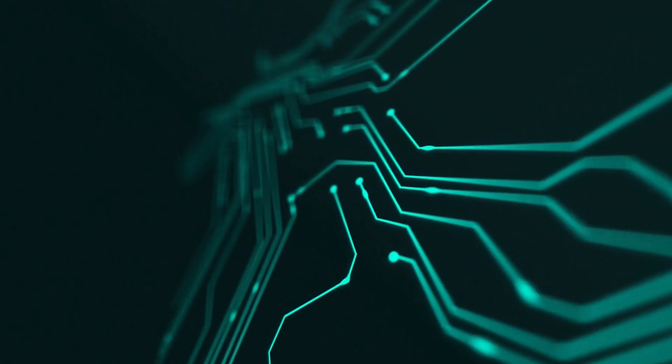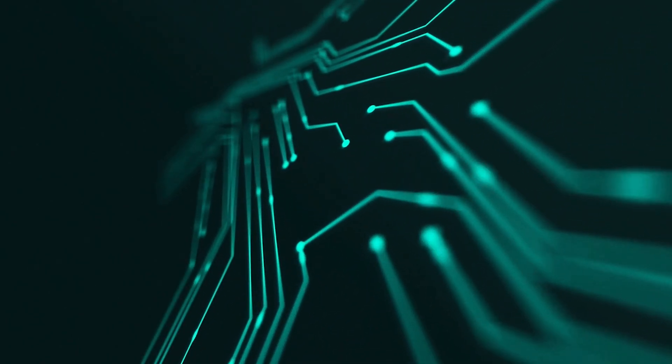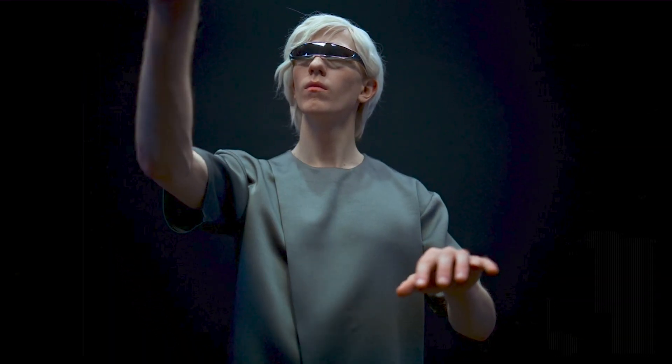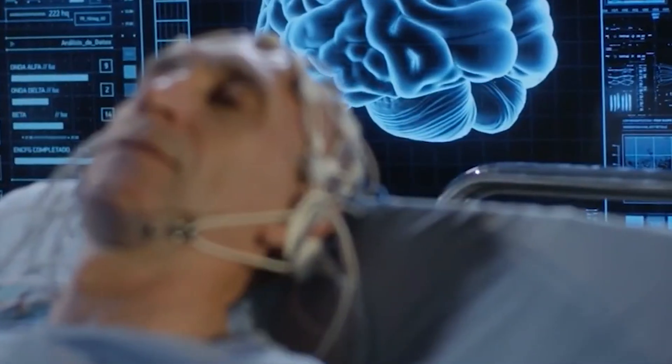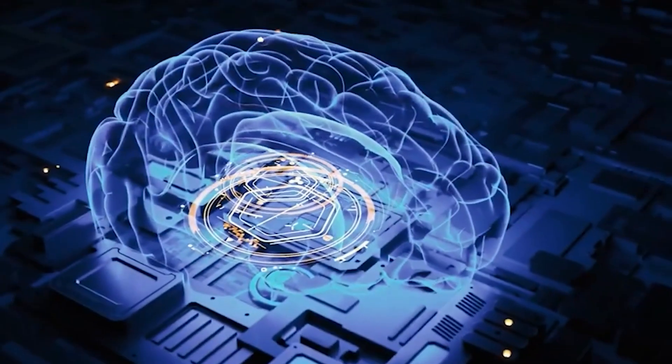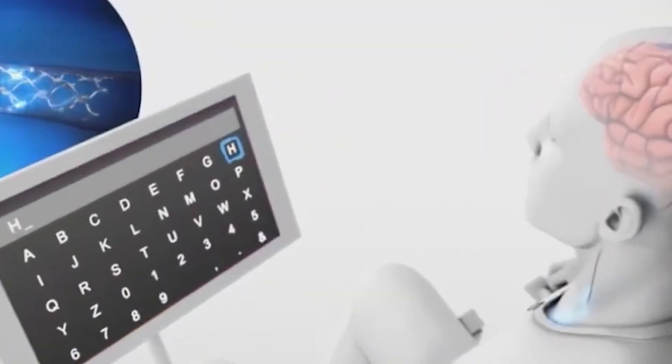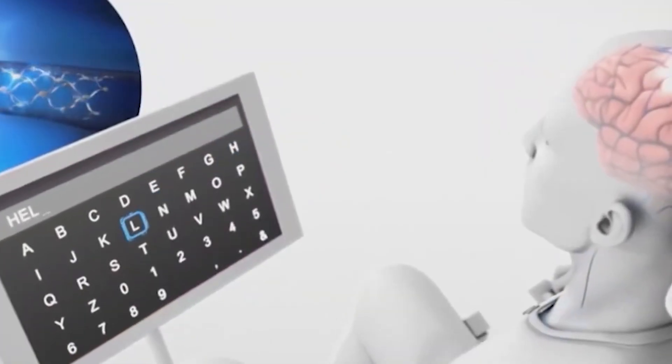Our brains work through tiny electrical signals passed between billions of neurons. Every thought, movement, emotion, or memory is essentially an electrical pattern. Neuralink's technology aims to capture those patterns, decode them, and turn them into commands that a machine can understand.